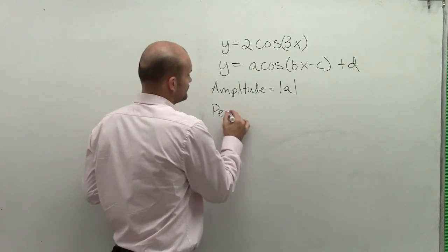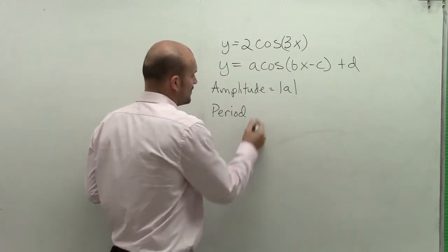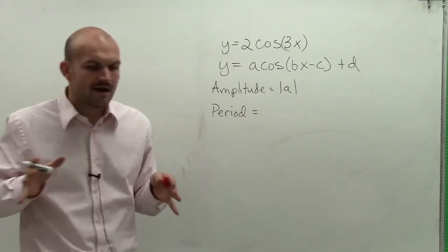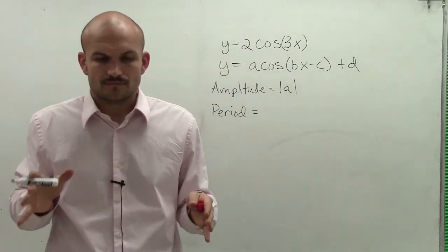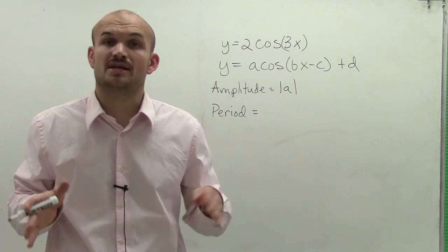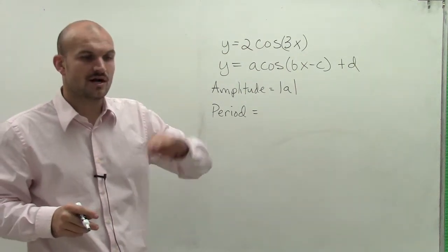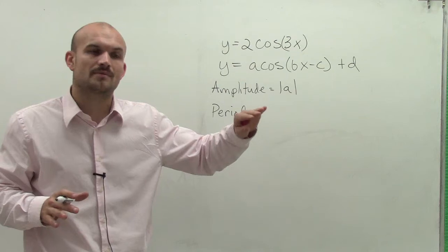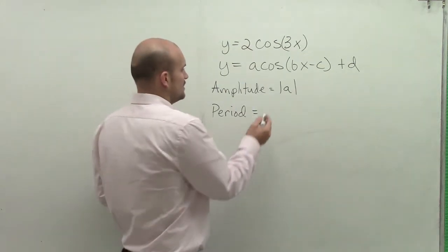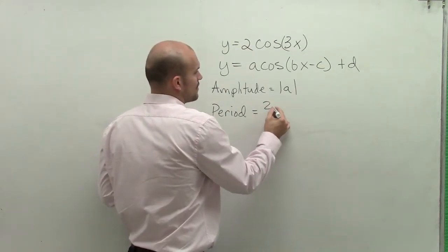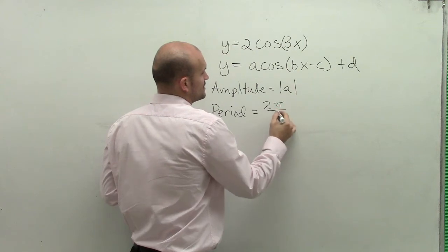And then to find the period, now remember the period of a function, that was how far it took our graph to complete a cycle for it to, wherever it started for it to go back to where the exact same point where it started again. So we said our period was always 2 pi divided by b.